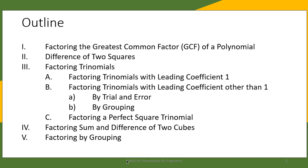So here is our outline. For the first one we are going to talk about factoring using the greatest common factor of the polynomial. Second, we will talk about difference of two squares. Third, we will talk about factoring trinomials — factoring trinomials with leading coefficient of one, factoring trinomials with leading coefficient other than one, and factoring a perfect square trinomial. Then we are going to talk about factoring the sum and difference of two cubes, and finally factoring by grouping.